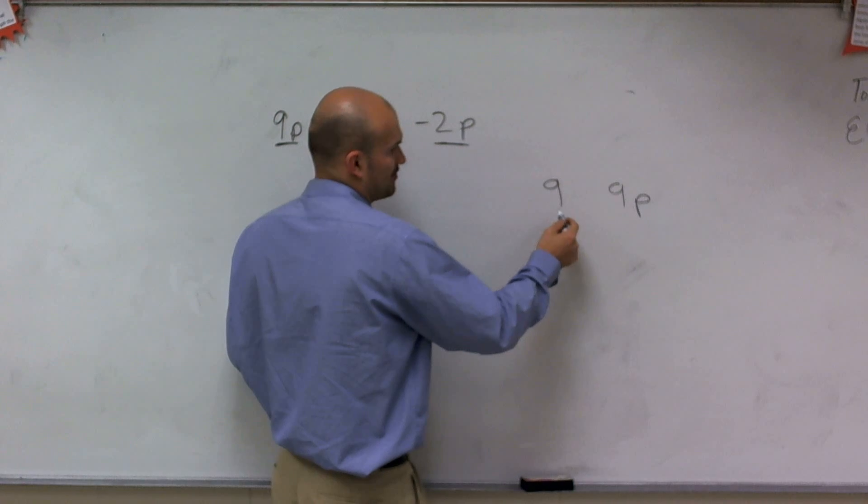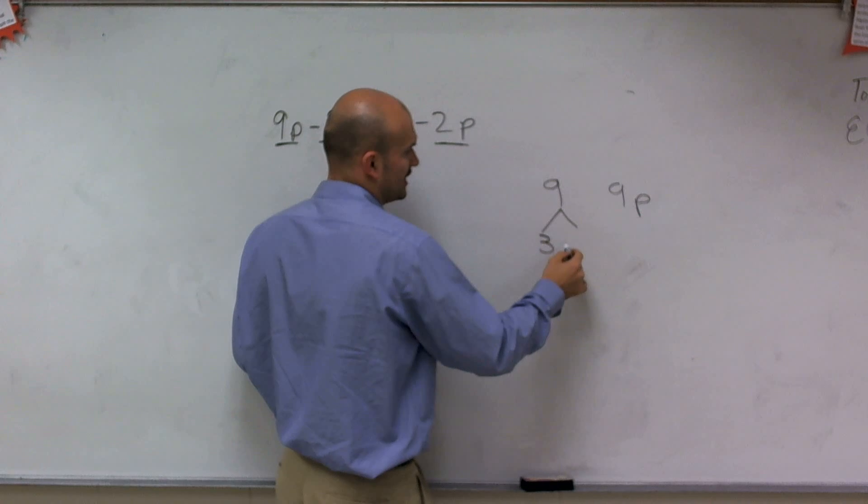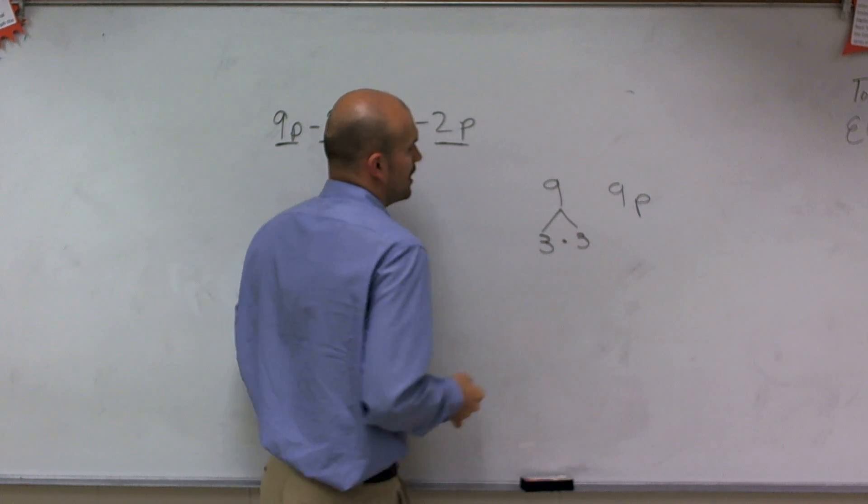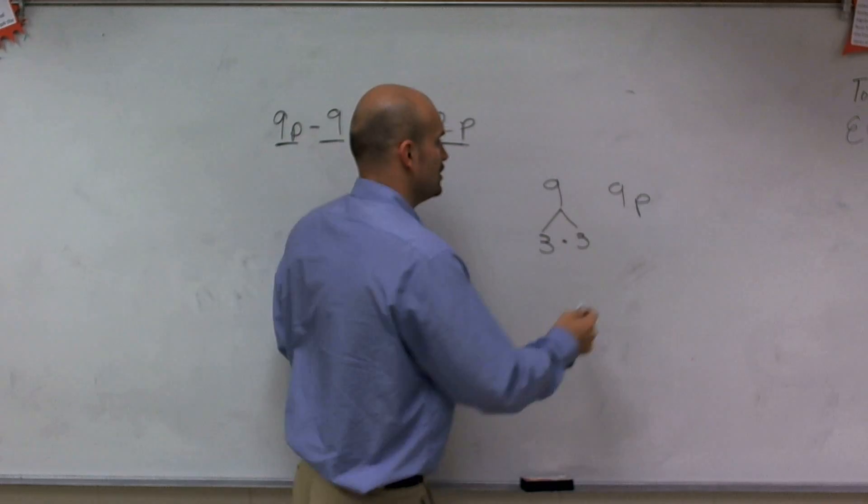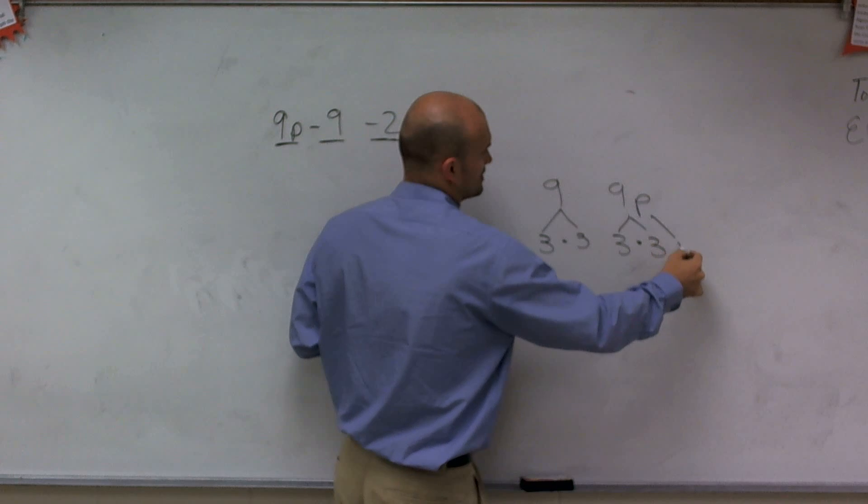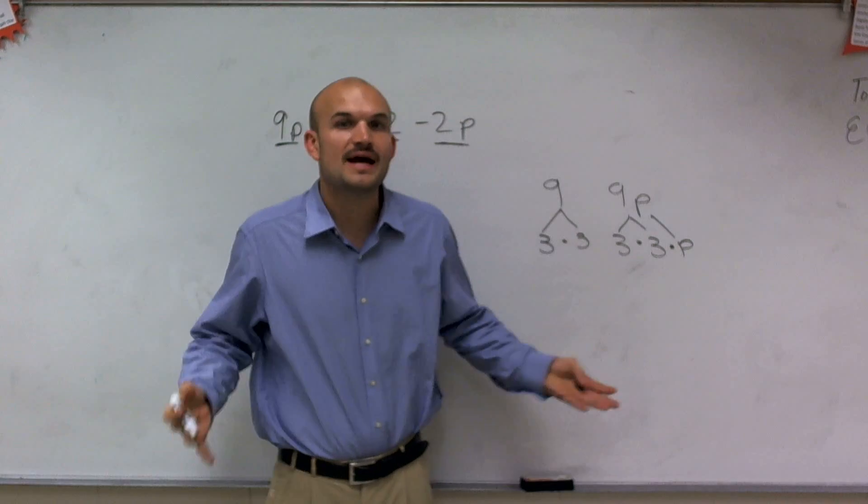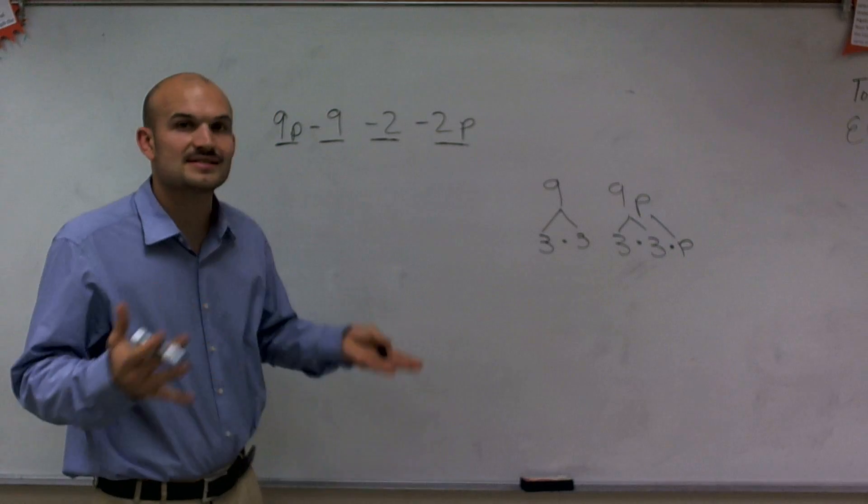When looking at the factors of 9 and 9p, if I was going to break this down, you could break 9 down into 3 times 3. However, to break down 9p, you'd have to break that down into 3 times 3 times p. So you can see that their factors are not the same. Therefore, we can't add and subtract them.